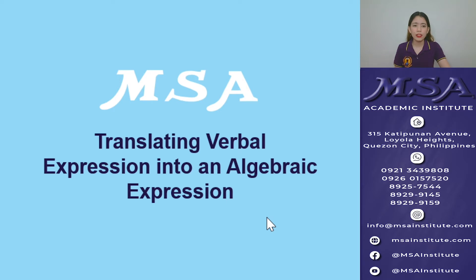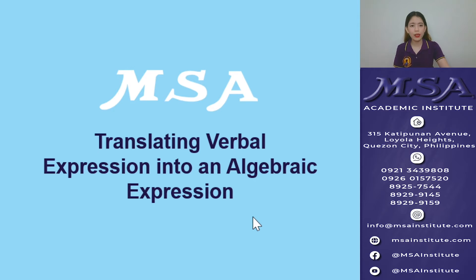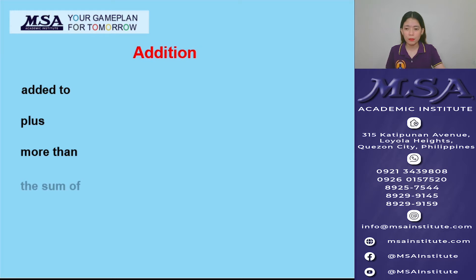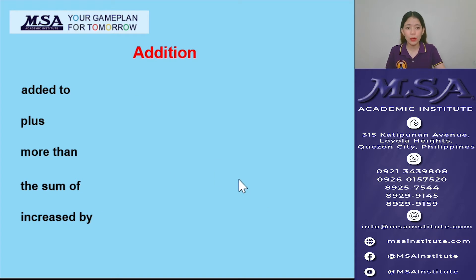First, let's try to recognize verbal phrases that can be translated into mathematical operations. Let's start with addition. The following phrases are used to indicate that the operation is addition: added to, plus, more than, the sum of, increased by. Once you encounter these phrases, it means that the operation is addition.